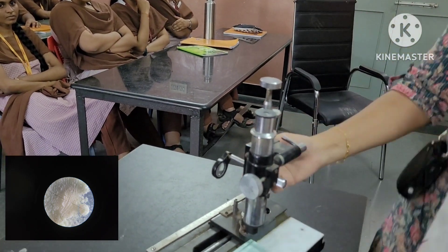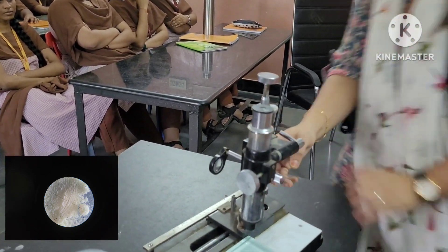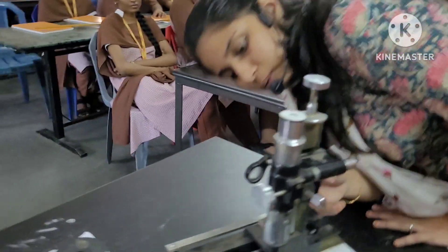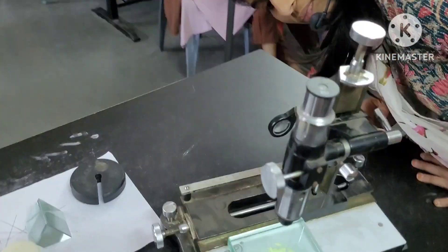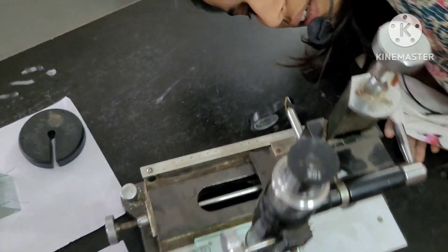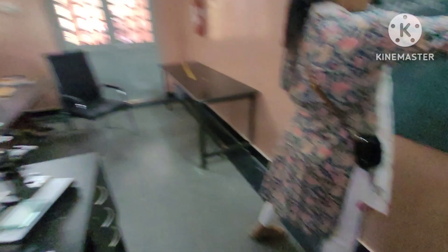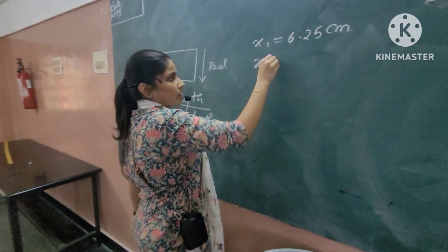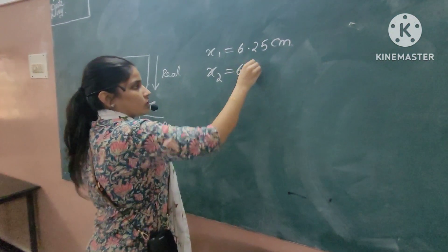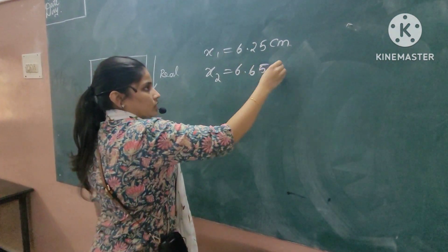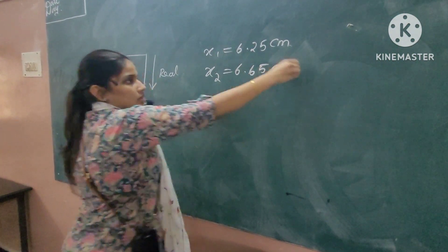Now you again take the reading here. This reading will be 6.65. So X2 is equal to 6.65 centimeter.